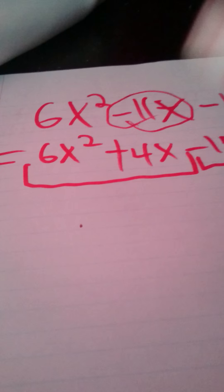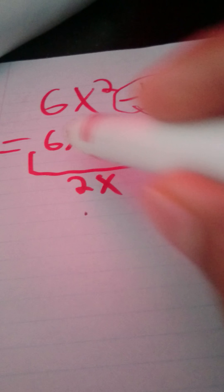Now, what you're going to do is collect your alike terms — these two and these two. Your alike terms in this equation will be 2x because they're both divisible by 2 and they both have x. This one here, both of them are negative and they're both divisible by 5, so we can have negative 5.